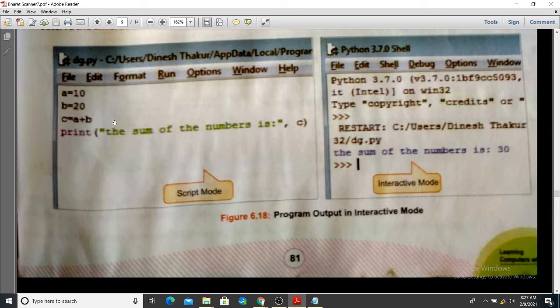So A and B, we have written values. Then we have stored A plus B. So 10 and 20 is an integer kind of data type. If I take 10.25, it will be float.